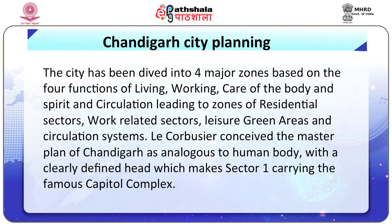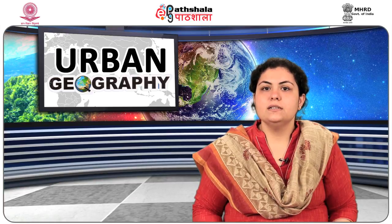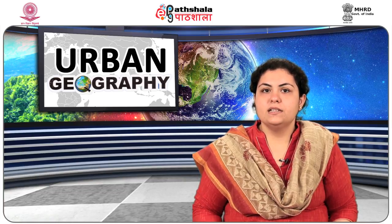The city has been divided into four major zones based on the four functions of living, working, care of the body and spirit, and circulation, leading to zones of residential sectors, work-related sectors, leisure and green areas, and circulation systems. Le Corbusier conceived the master plan of Chandigarh as analogous to the human body, with a clearly defined head — sector one — carrying the famous capital complex, consisting of the secretariat building, the high court building, and the legislative assembly, considered architectural masterpieces globally. Within this capital complex stands the giant metallic structure of the open hand, the official emblem signifying the city's philosophy of being open to give and open to receive.